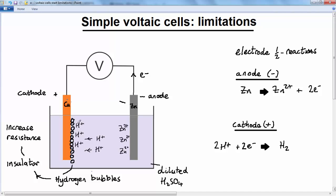So consequently, you get this buildup of positive hydrogen ions on the copper cathode, and these act as a barrier which prevent any other hydrogen ions approaching.